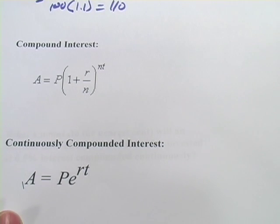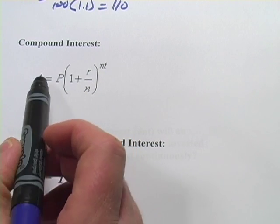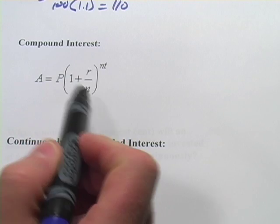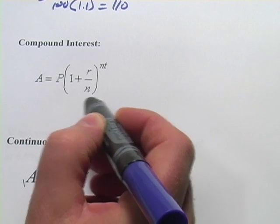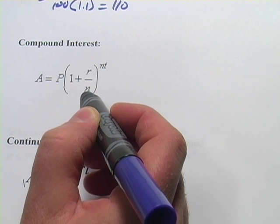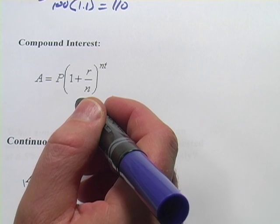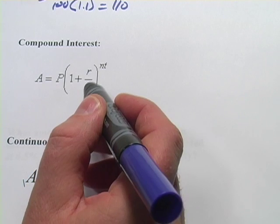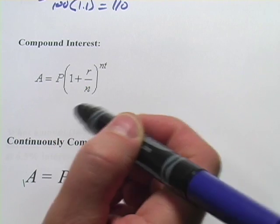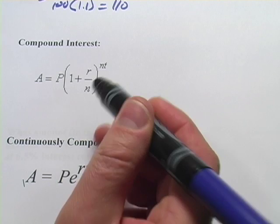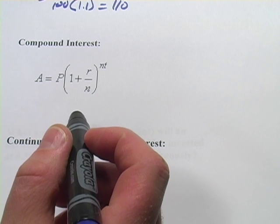Compound interest, much better way to go. So in compound interest, you have the amount equals the principal times 1 plus, and this is the rate over n, and n is the number of times you compound it in a particular time period. Typically, if you compound it once a year, that number would be 1, and so the n wouldn't even figure in here. But you can also get deals where you get a yearly rate, but you get to compound it every month. Let's look at the difference in that, actually.